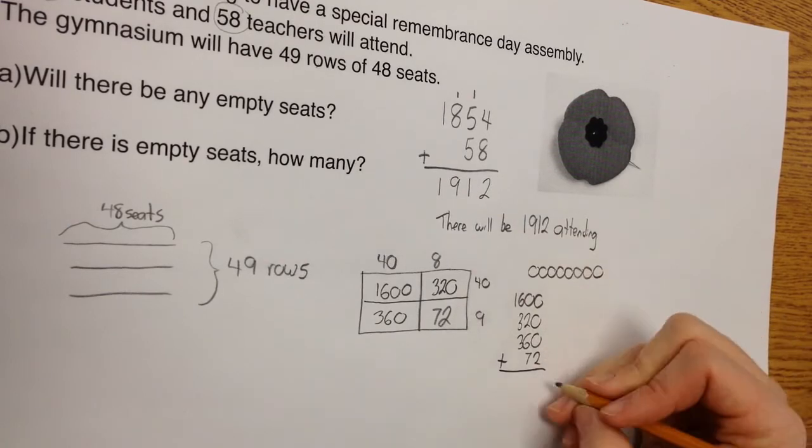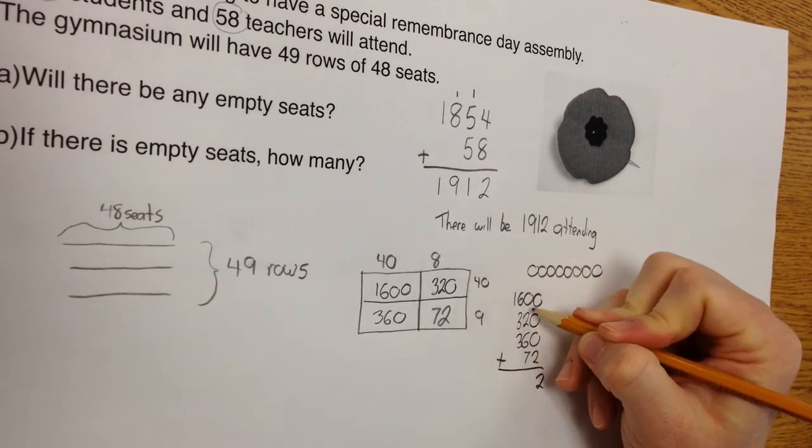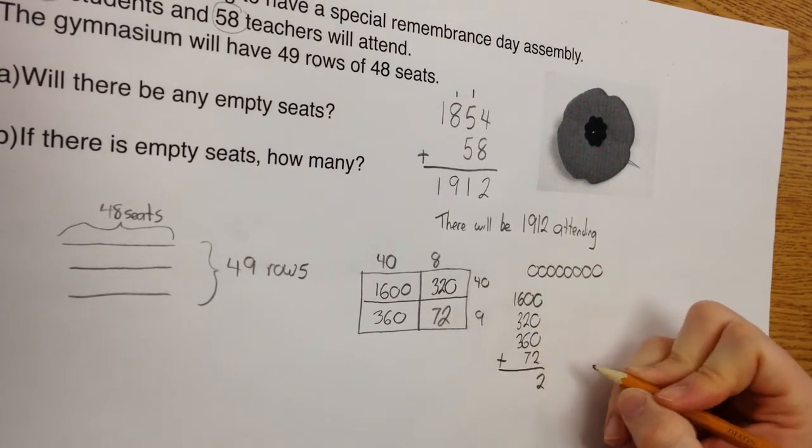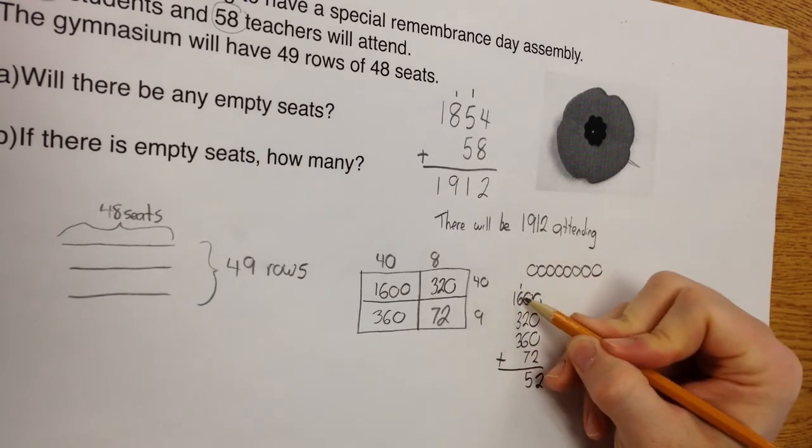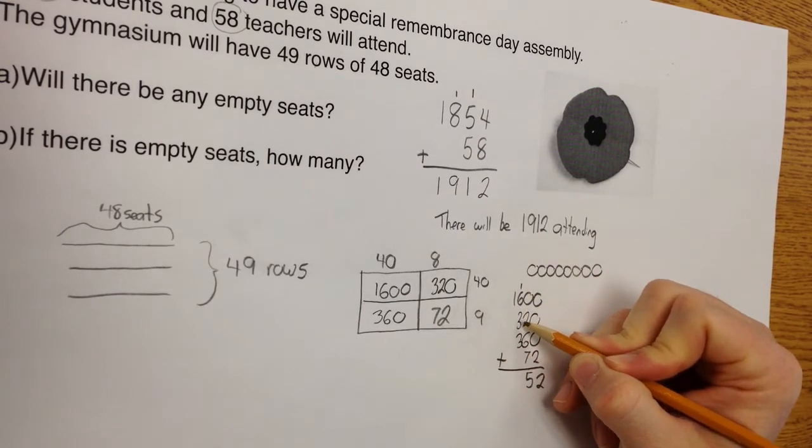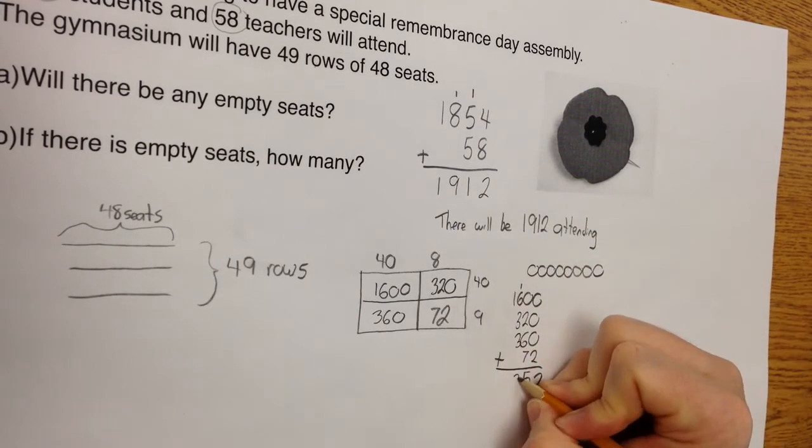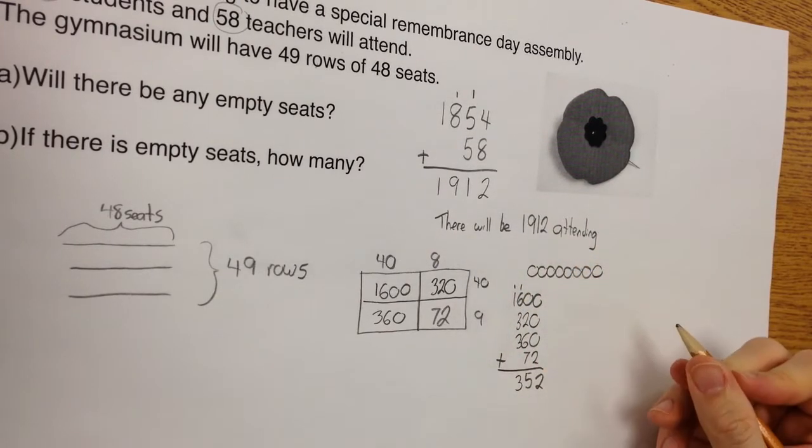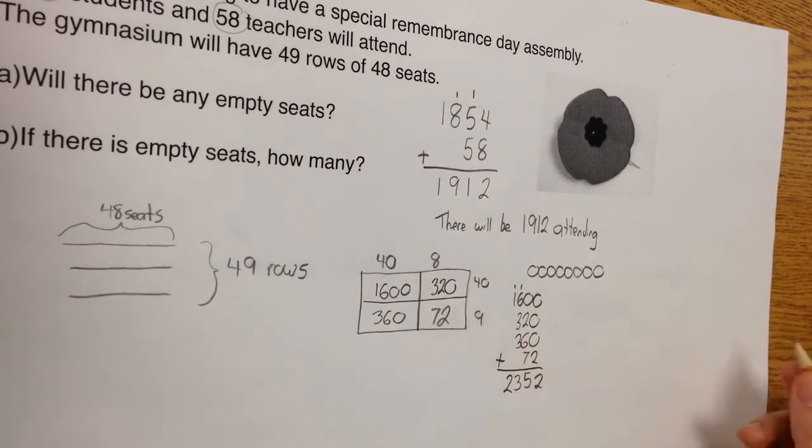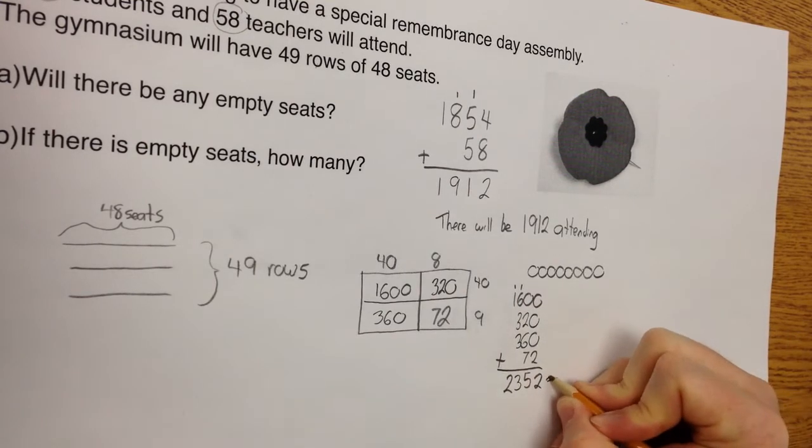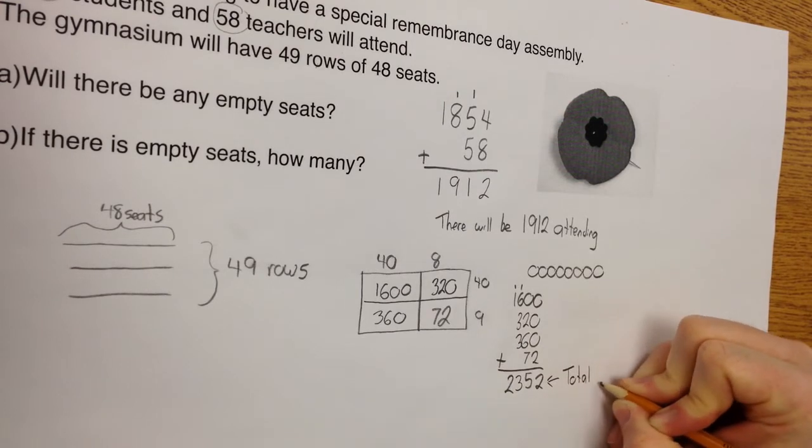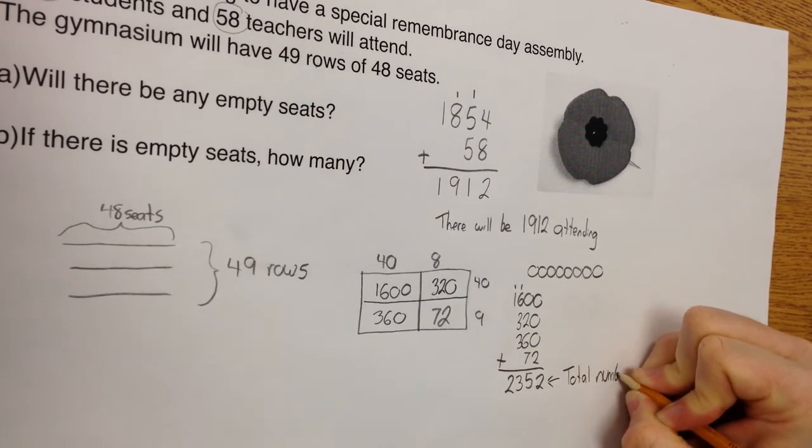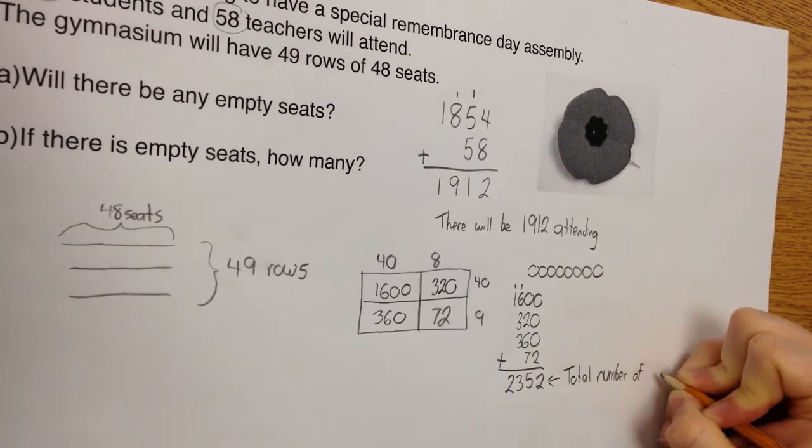So on my 1s columns, we'll come to 2. My 10s columns, 2 plus 6 is 8, and another 2 is 15. 1 plus 6 is 7, 7 plus 3 is 10, 10 plus 3 is 13. 1, and I have 1 plus 1, which is 2. 2,352. This, I believe, is the total number of seats.